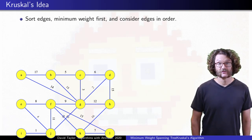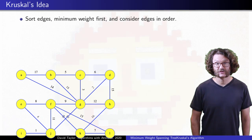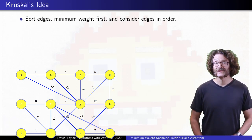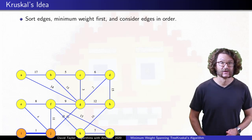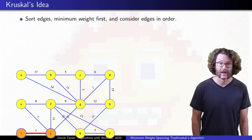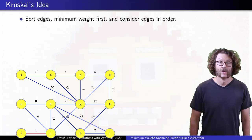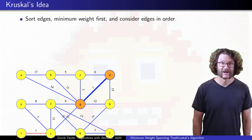To simplify my proofs, I assume edge weights are distinct, but the algorithm works regardless. We consider edges in order, lightest edge first, and for each we determine if it is in the Minimum Spanning Tree or not, right then and there. We never wait or change our mind later.